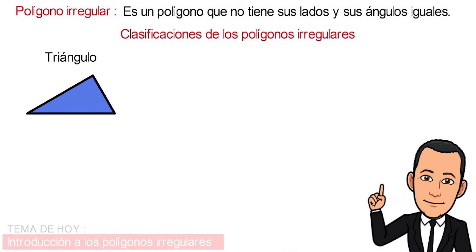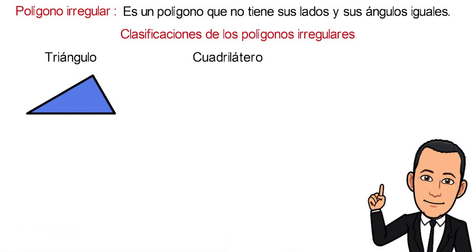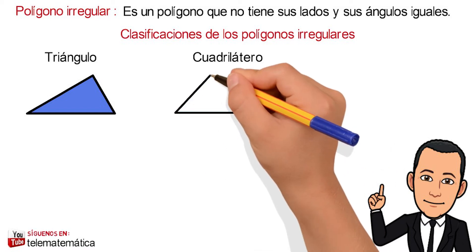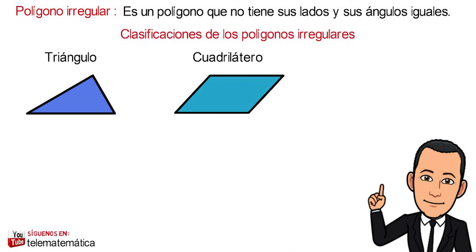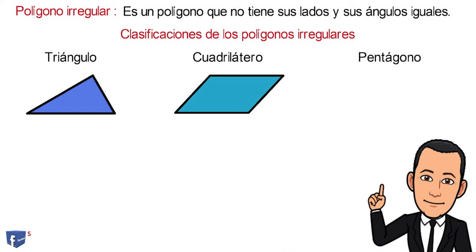In second place, the quadrilateral, that is defined as four sides. In this case we have a rhomboid. In third place, we have a pentagon, that is defined as five sides.